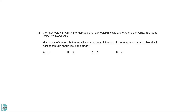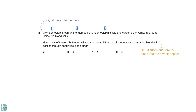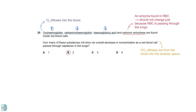As a red blood cell passes through capillaries in the lungs, carbon dioxide diffuses out from the blood into the alveolar space. This causes a decrease in the quantities of carbaminohaemoglobin and haemoglobinic acid. Oxyhaemoglobin should increase as oxygen diffuses into the blood. Carbonic anhydrase is an enzyme found in the red blood cells — it should not change.